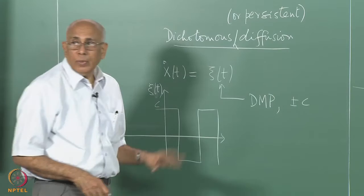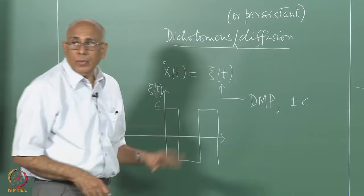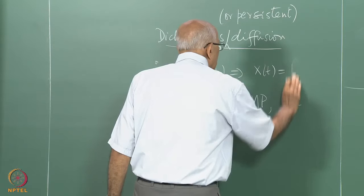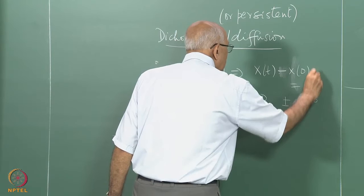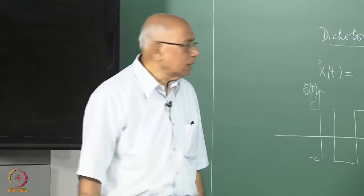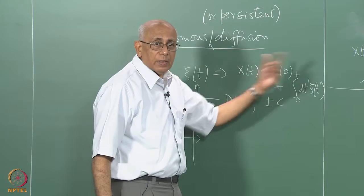You can get to the probability density for this process in several ways. This implies that X(t) minus X(0) equals the integral from 0 to t of xi(t') dt'. So in some sense you want the integral of a dichotomous process. We can find out what the correlation of this is; a typical realization looks like a piecewise-linear path with reversals forming a Poisson sequence of points.